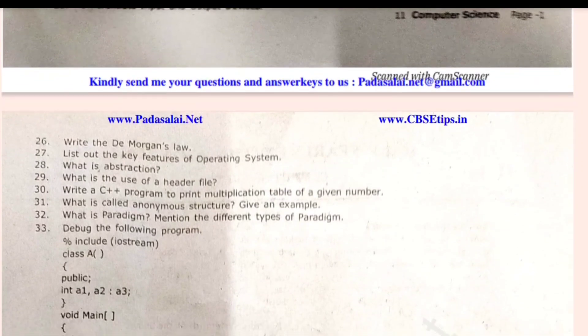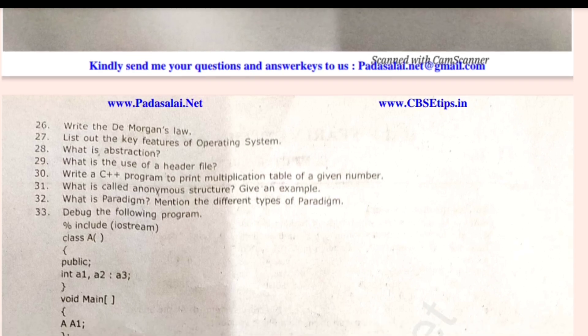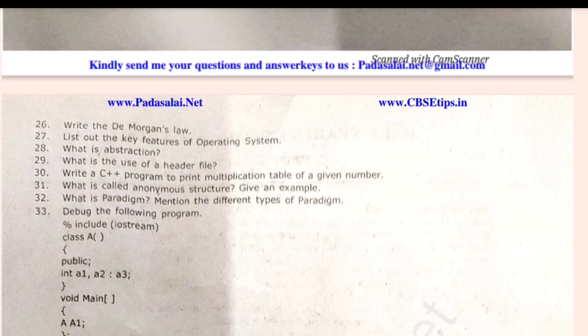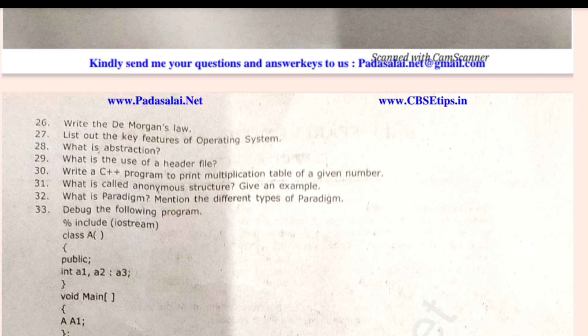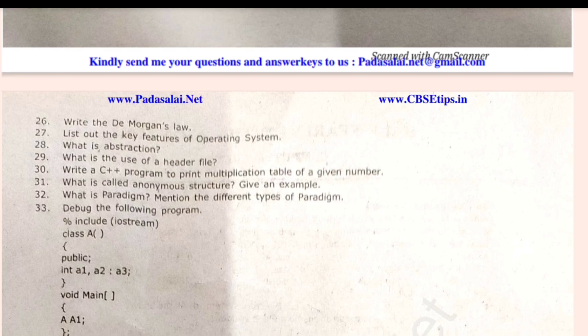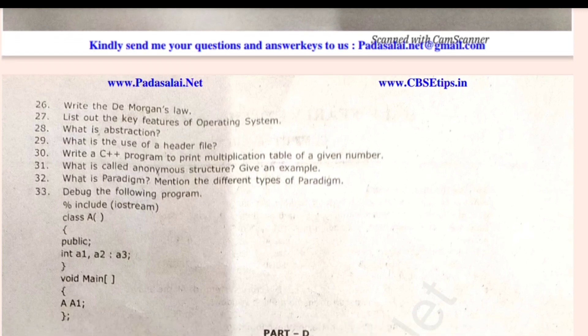Next is Part D — 5 marks. Question 34: Discuss the various generations of computers, or explain derived gates with expressions and truth tables. Question 35: Explain the concept of distributed operating system along with its advantages, or write the procedure to create a shortcut in Windows OS.